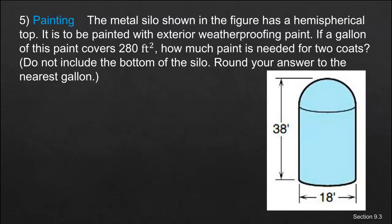The metal silo shown in the figure has a hemispherical top. It is to be painted with exterior weatherproofing paint. If a gallon of this paint covers 280 square feet, how much paint is needed for two coats? Don't forget about that part. Do not include the bottom of the silo. Round your answer to the nearest gallon.